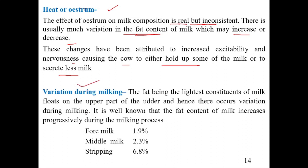Variation during milking also occurs. Fat is the lightest component of milk and floats to the upper part, so fat content increases progressively during the milking process. Fore milk has the lowest fat content at around 1.9%, middle milk has approximately 2.3% fat, and strippings have the highest fat content.